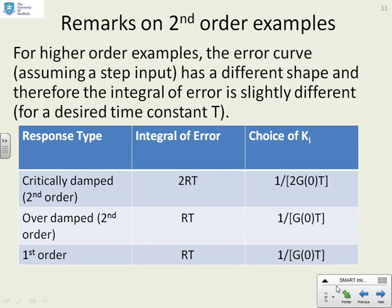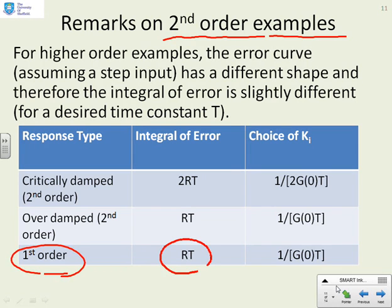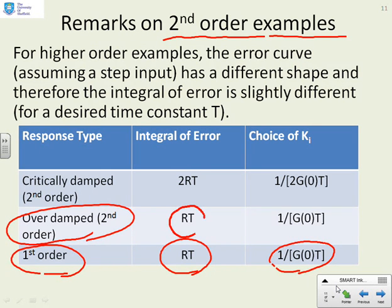What happens then if you have a second order example? Well, this heuristic design was based upon a particular error curve where the error curve was based on a first order type of response. So if you've got a first order model, you find the integral of the area is approximately rT. And you can use this value as the choice of ki. And it's fairly effective. If you've got an overdamped second order system and you know what time constant you want, you'll notice you can get away with using the same sort of formula.